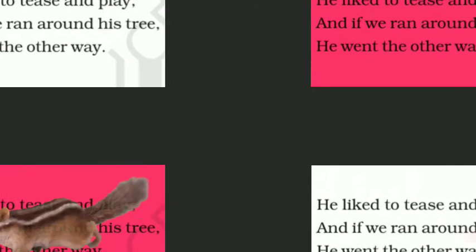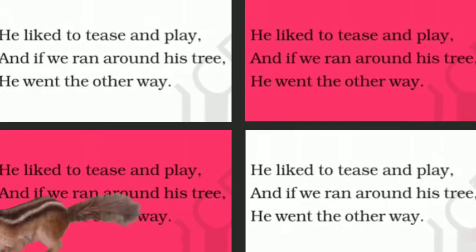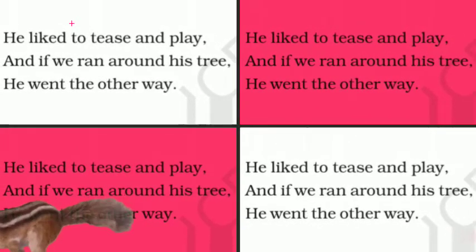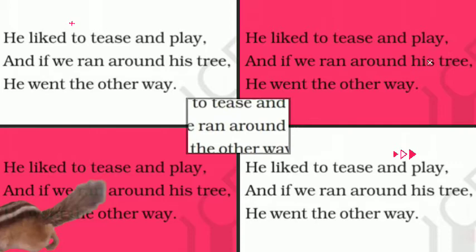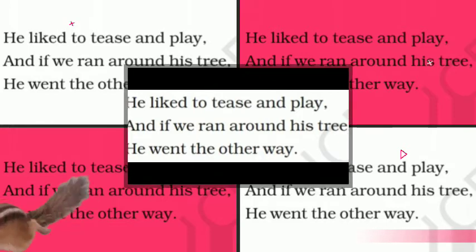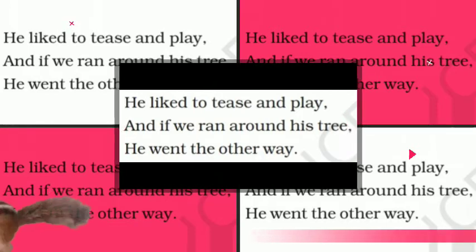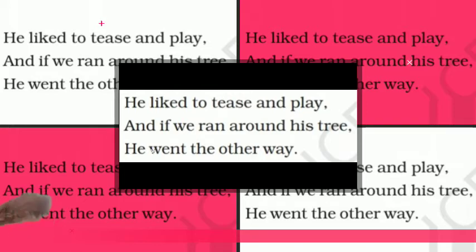Where did the poet find the squirrel? He found the squirrel sitting on a tree in his garden, eating nuts and sitting in an upright position. As we know, squirrels are fond of eating nuts. They are also very naughty and playful by nature. In the poem, the squirrel started teasing the poet and his friends, showing that squirrels are naughty and playful animals.